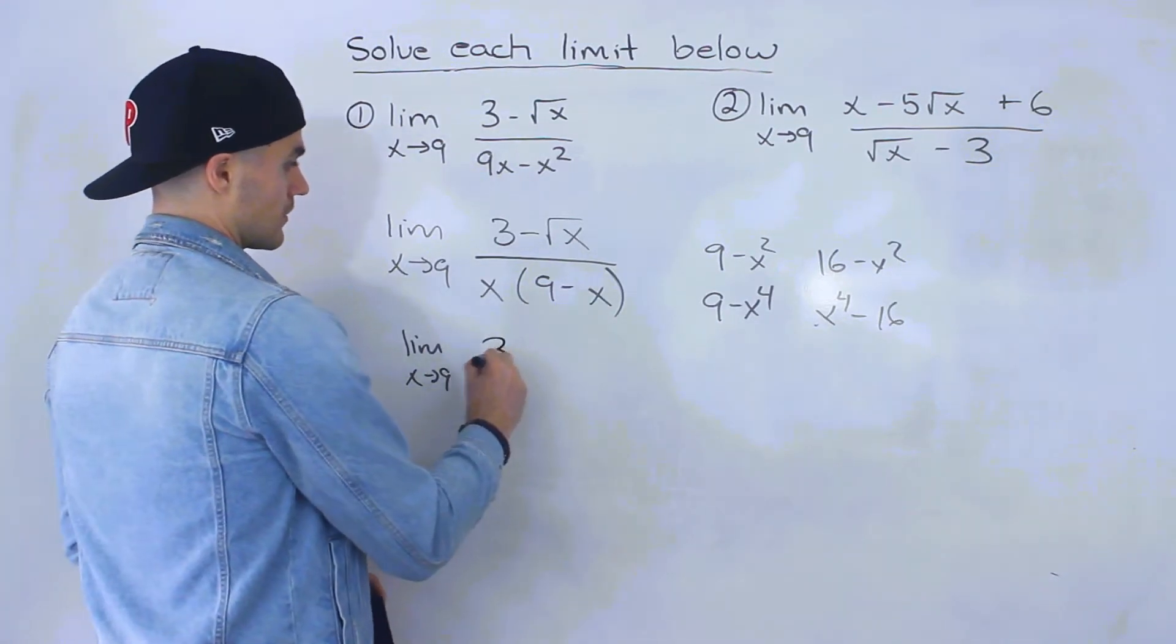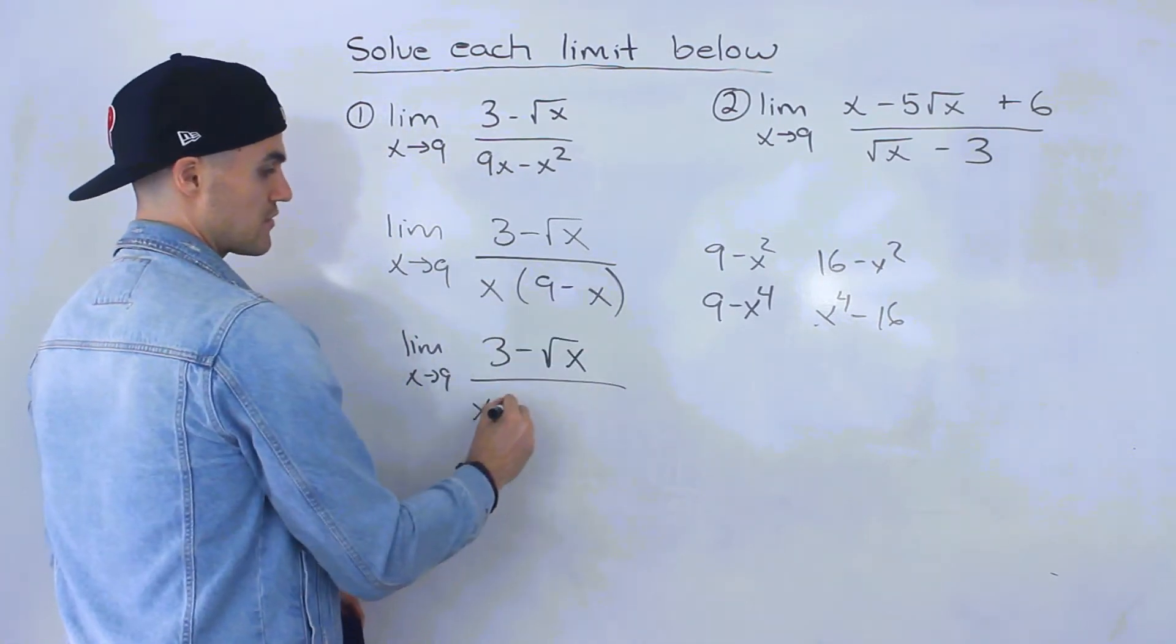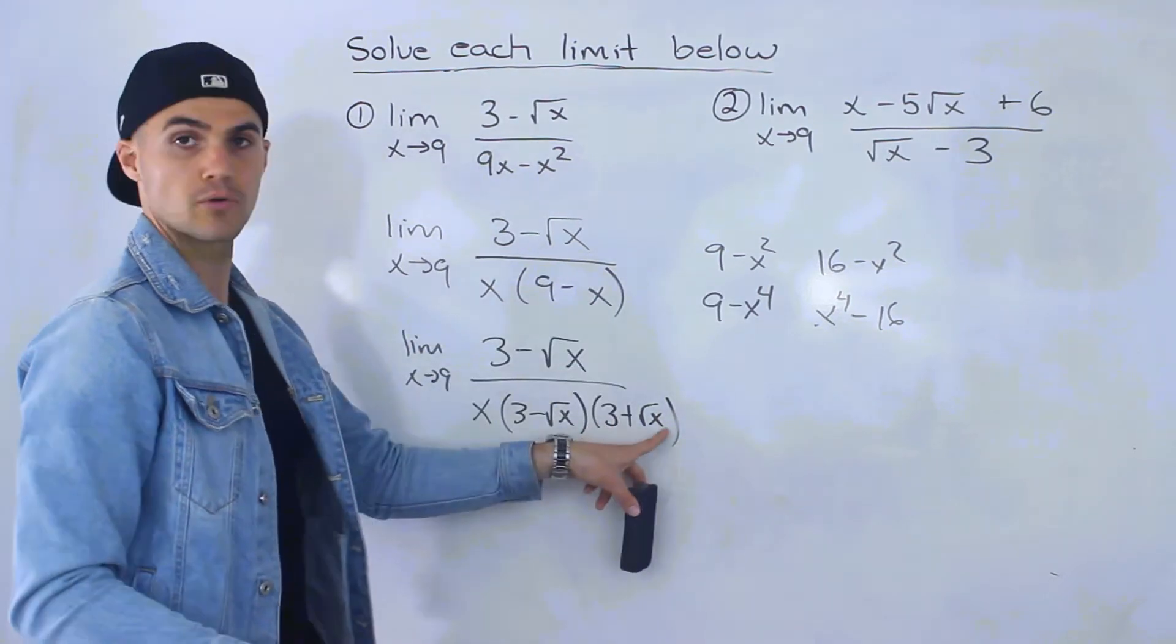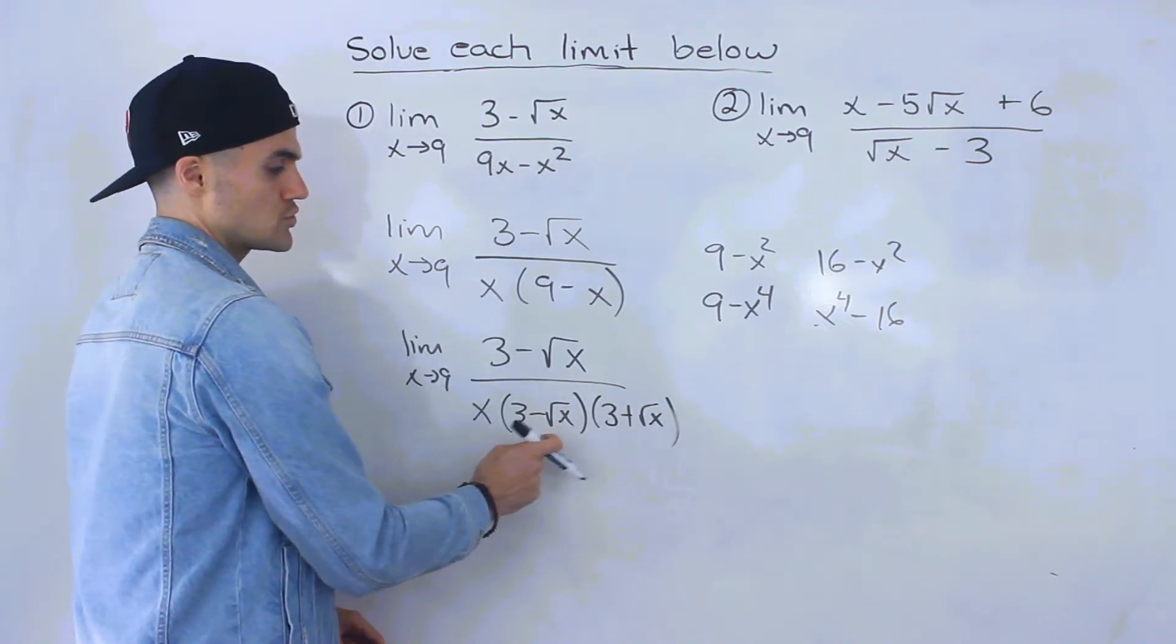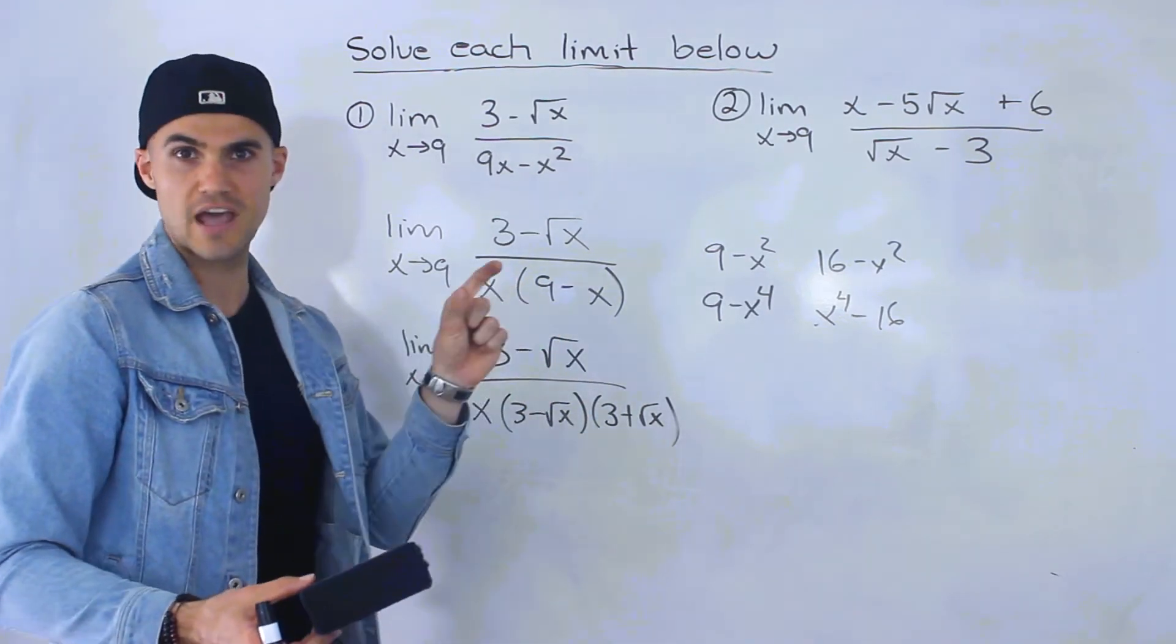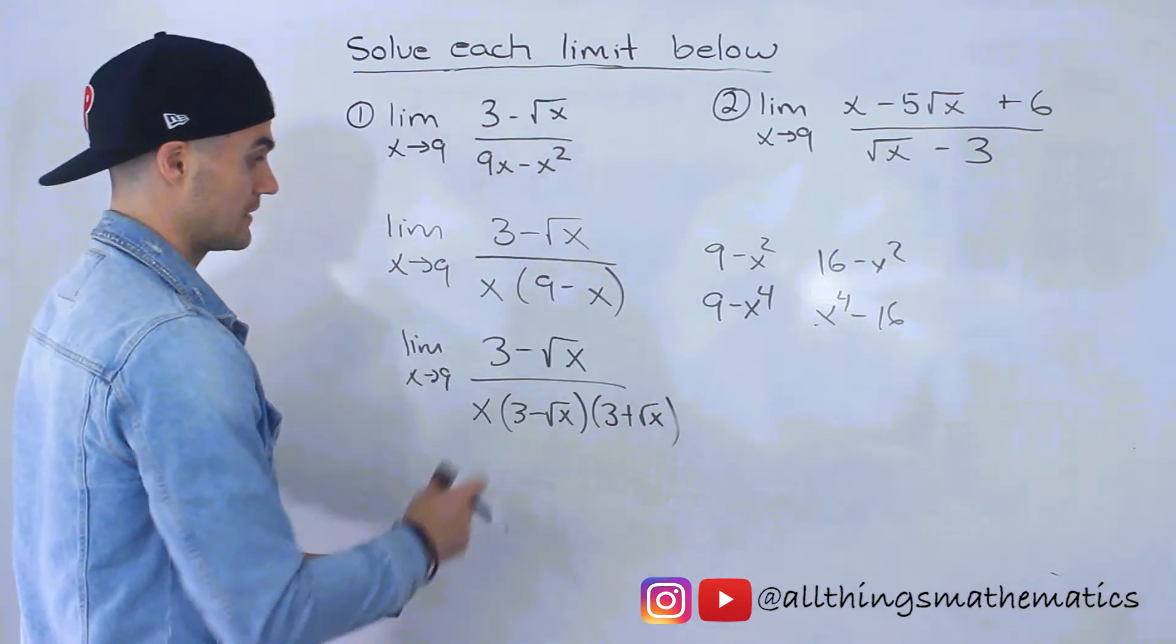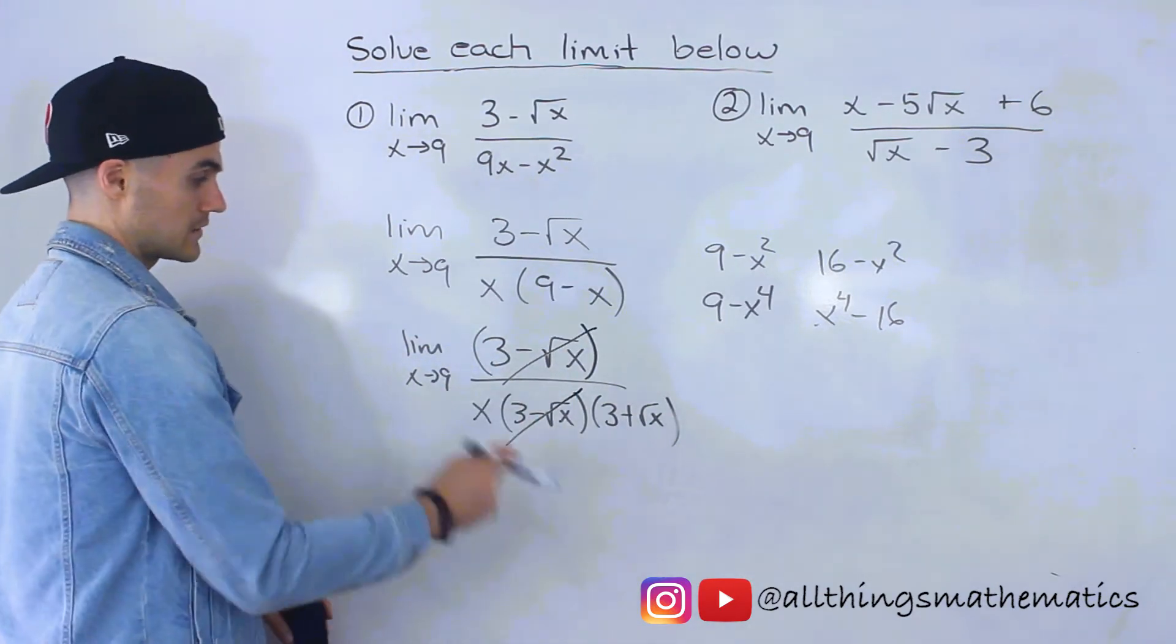But here, we can do a difference of squares on this too. It would be (3 minus root x)(3 plus root x), because the square root of 9 is 3. We're not used to doing it this way because when factoring, we don't usually get factors with roots in them. But you can factor this as ugly factors. Nevertheless, these cancel out, and now we can directly substitute 9.